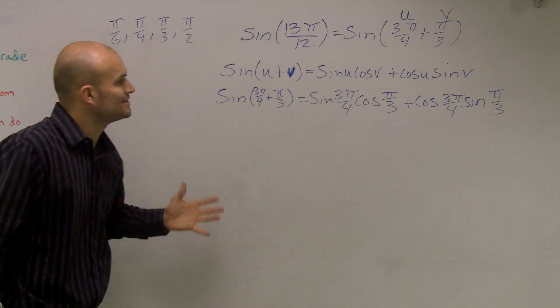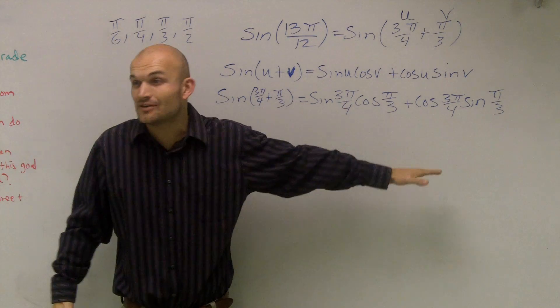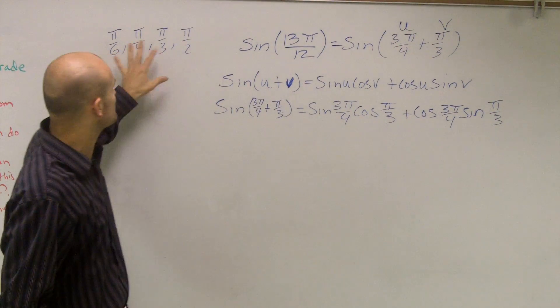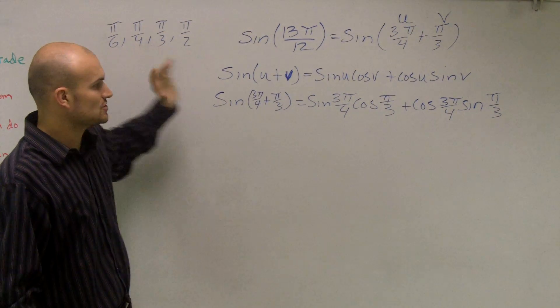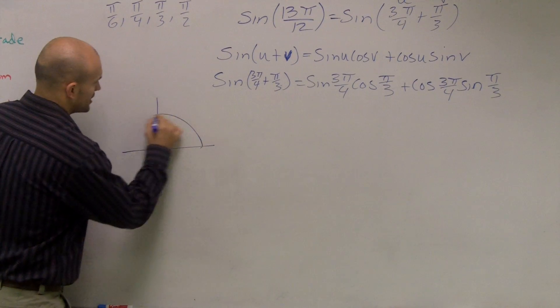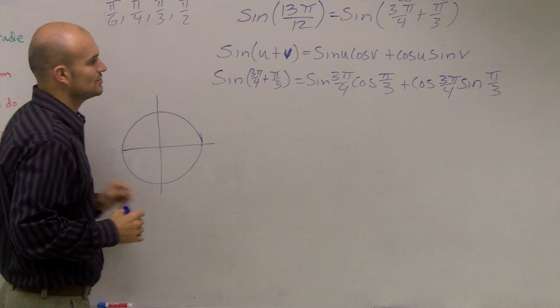So now what I need to do is I need to determine what these values are. Now luckily, these are all values that we know are on the unit circle because I used multiples of these angles so I can determine what these angles are. So I'll just draw a quick little unit circle here.